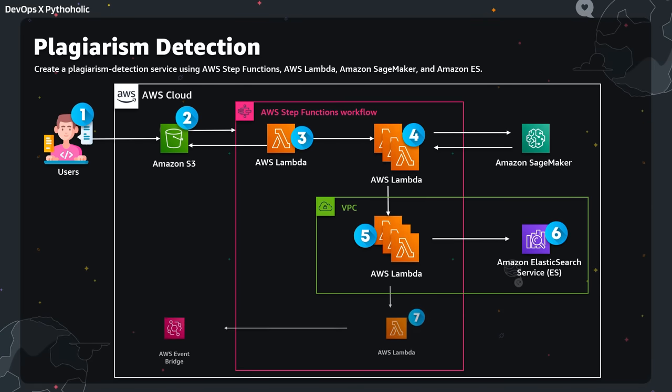Let's take an example of a real-time AWS project: plagiarism detection. This is a simple application to detect plagiarism in your account. Plagiarism is presenting someone else's work or ideas as your own, with or without their consent, by incorporating it into your work without full acknowledgement. This application can help you detect if there is any plagiarism in the document that you have.